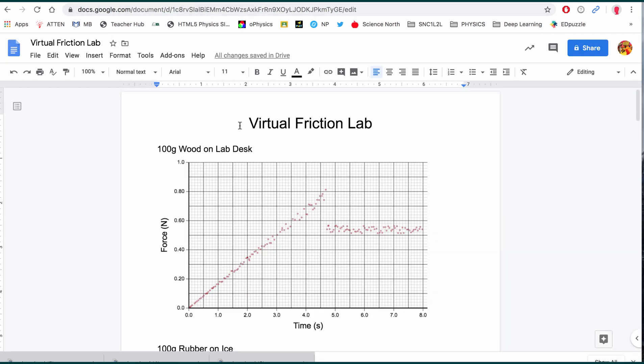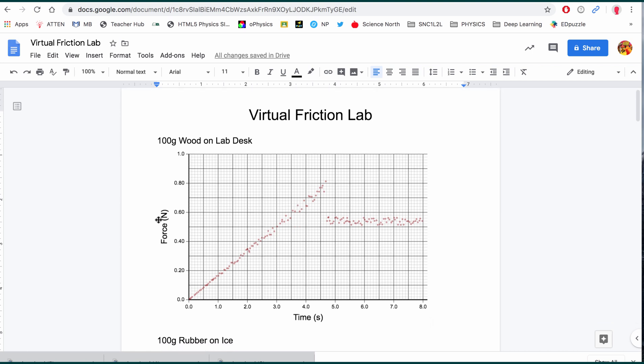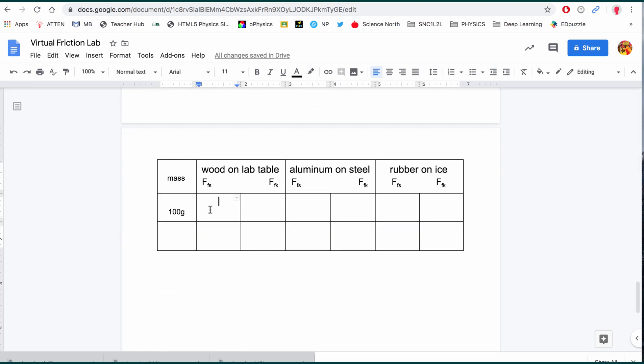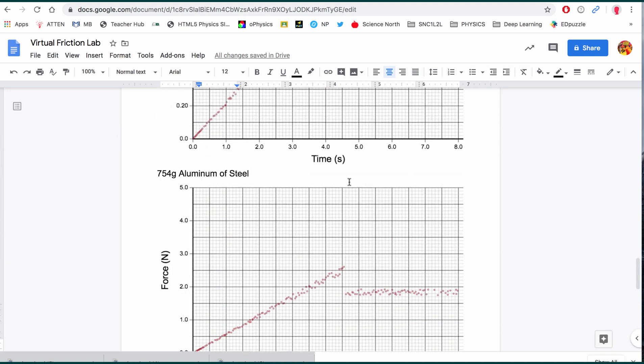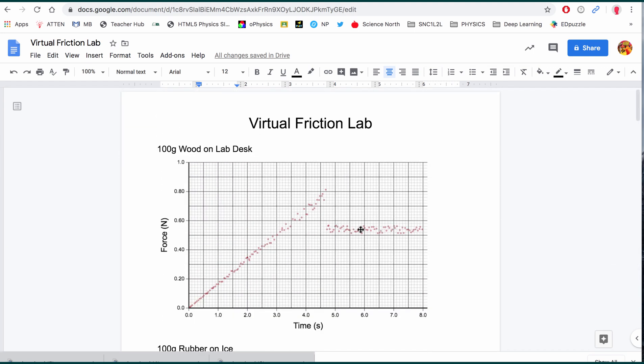So what I've done now is just gone into a Google Doc and created an area to put all my observations. So I've got each of my graphs that we've generated labeled 100 grams wood on lab desk. And essentially what we're going to do is simply try to find the peak of this diagonal line. And it looks like it's somewhere in the neighborhood of about 0.8. Now there is a dot that's above it. It looks like most of them are just slightly below it. So I'm going to go with 0.79. Now I have a table at the bottom here. And I'm going to say my FFS is 0.79. So that's the value that we're going to take from the peak of that first graph. And if we want to figure out a line of best fit for these horizontal lines, it's somewhere around 0.55.